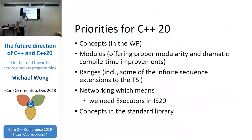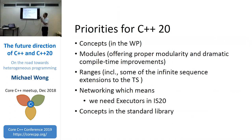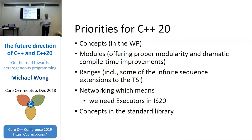In terms of C++20 priorities: concepts are now in the working paper. Modules we're still trying to get in. Ranges are now in. Networking depended on executors, and we now have a lightweight executor. But networking is being held back because it's too big to process in one meeting and the specification is five years old.